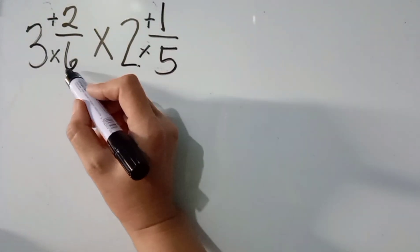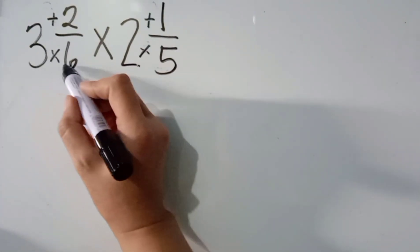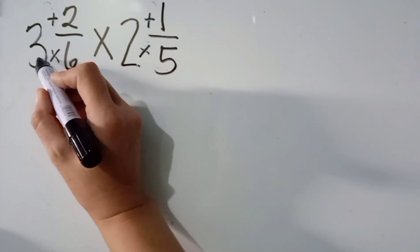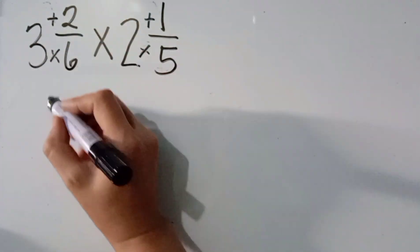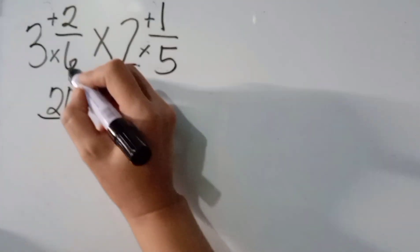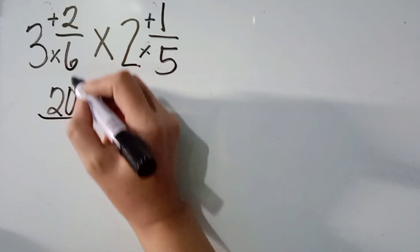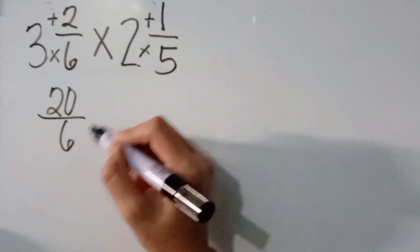Let's start. 6 times 3, the answer is 18. 18 plus 2, the answer is 20. And then, just copy the denominator na 6.